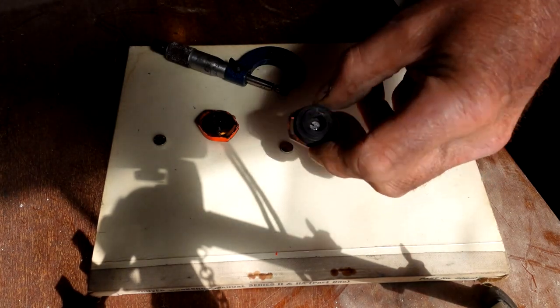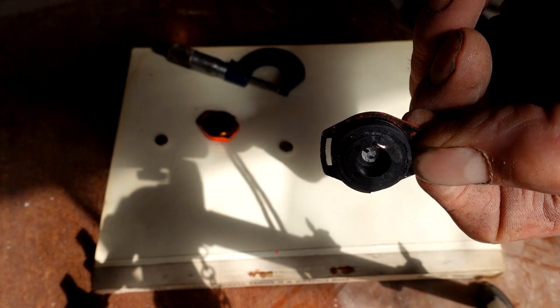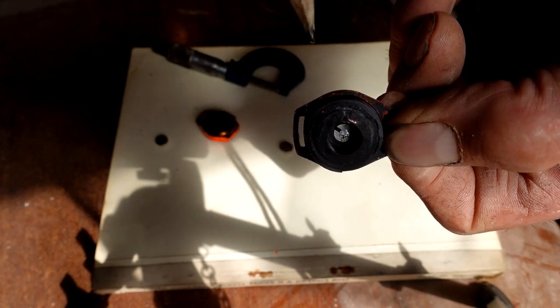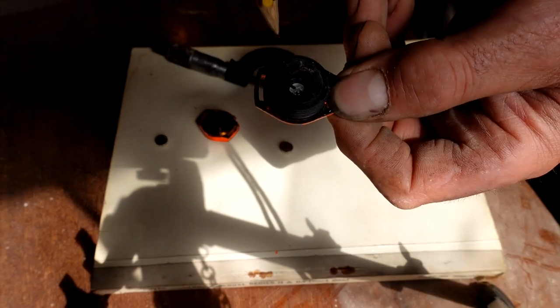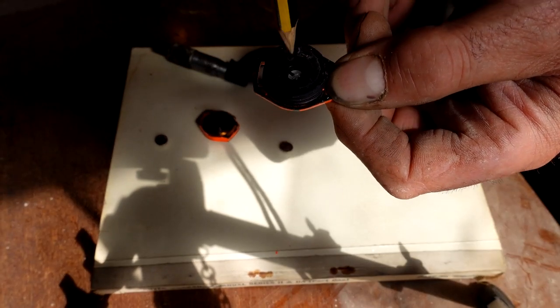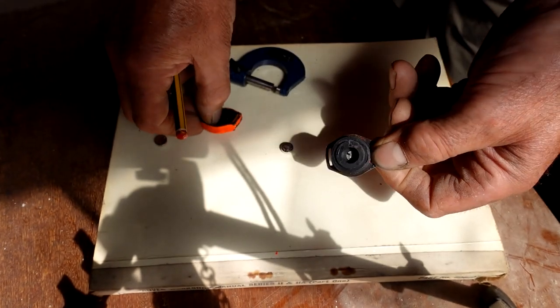This is a ferret finder transmitter which came to me in pieces and I've managed to mend. The negative battery terminal contacts in the bottom of the battery case there, and the positive...